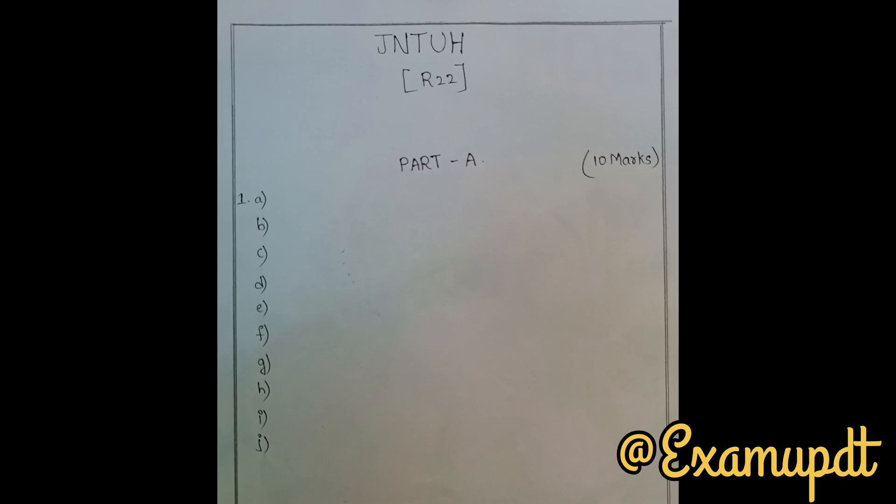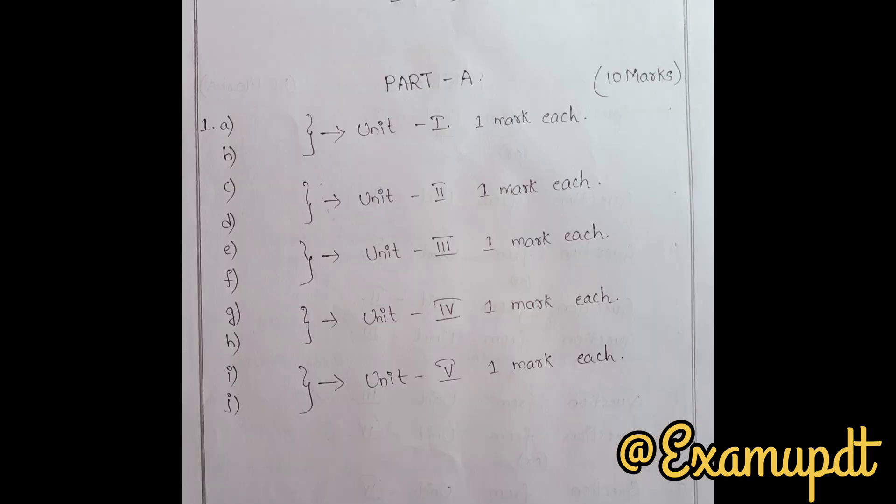For R22 regulation, the pattern is similar to R18, but Part A short answers carry only one mark each. Questions 1 to 10, labeled A to J, each carry one mark. From every unit you get two questions — as you can see in the image, questions 1 and 2 are from unit one, questions 3 and 4 from unit two, and so on.